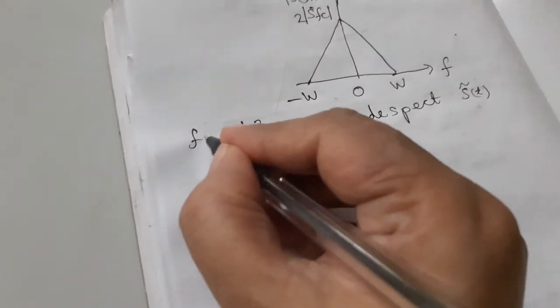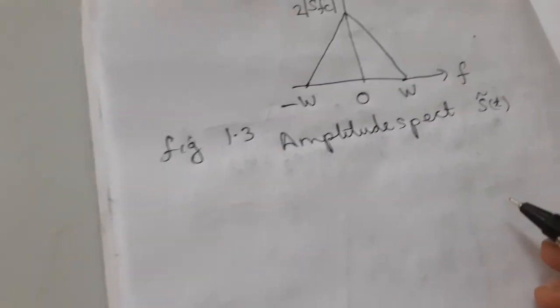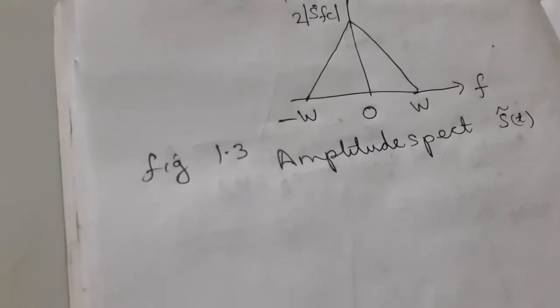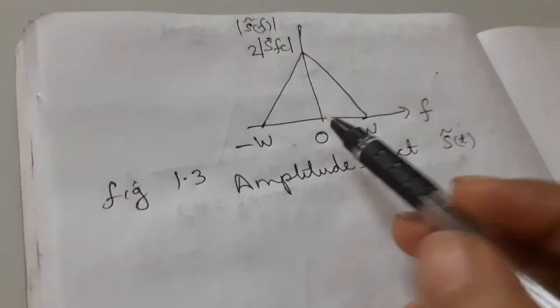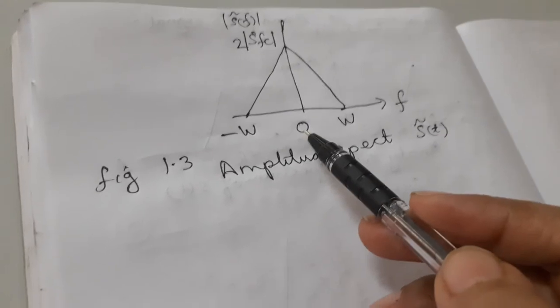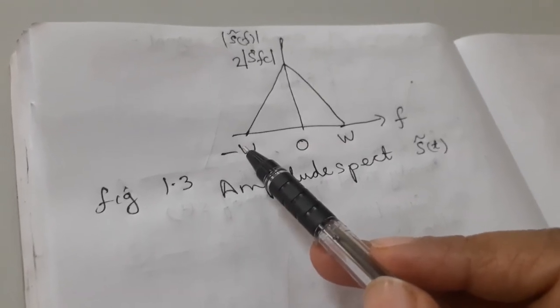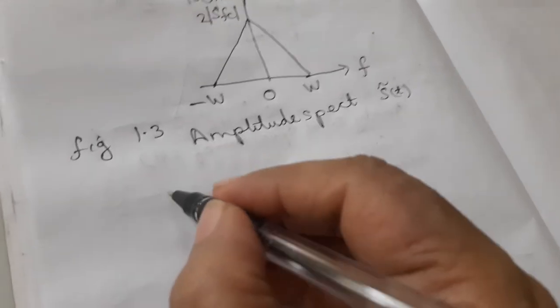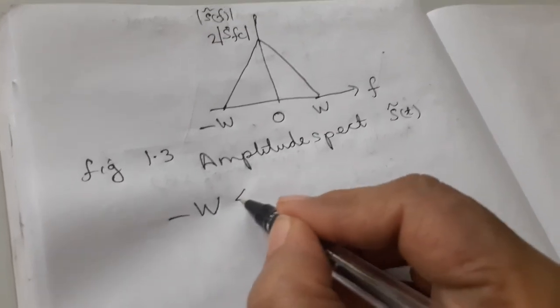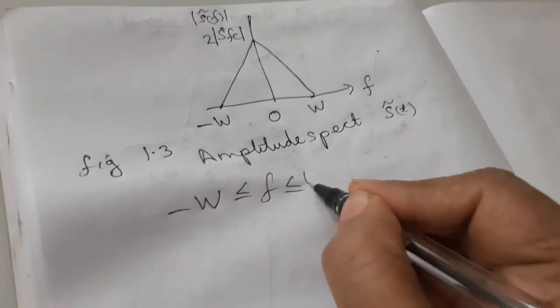From figure 1.3, we find that the amplitude spectrum of the complex envelope S tilde of t is centered at f equal to 0 and restricted in the band of minus w and w. So, you can write minus w less than equal to f less than equal to w.